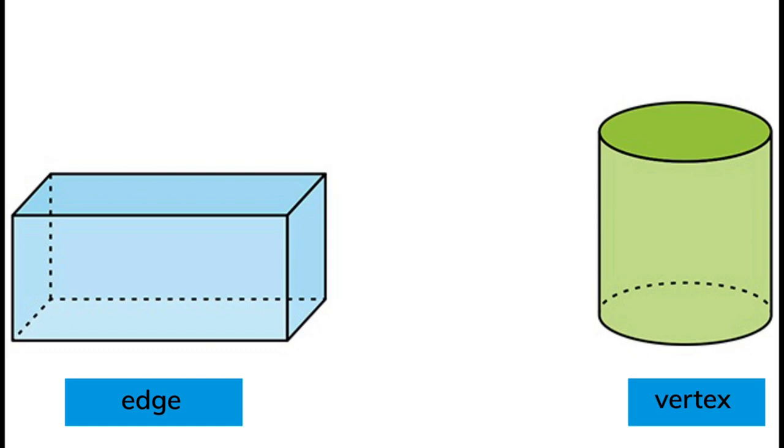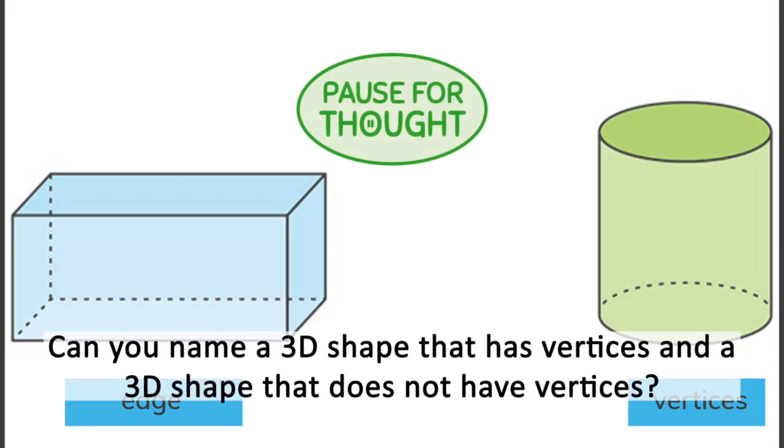The corner of a 3D shape is called a vertex. If there is more than one, we say vertices. A cylinder has no vertices. Can you name a 3D shape that has vertices and a 3D shape that does not have vertices?